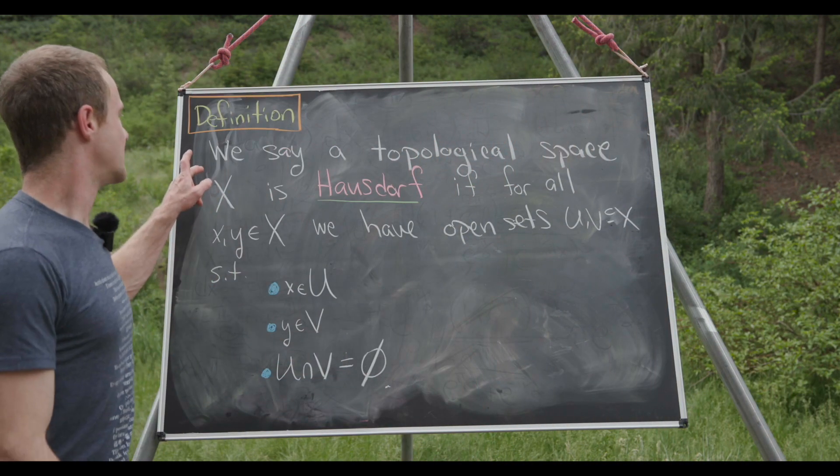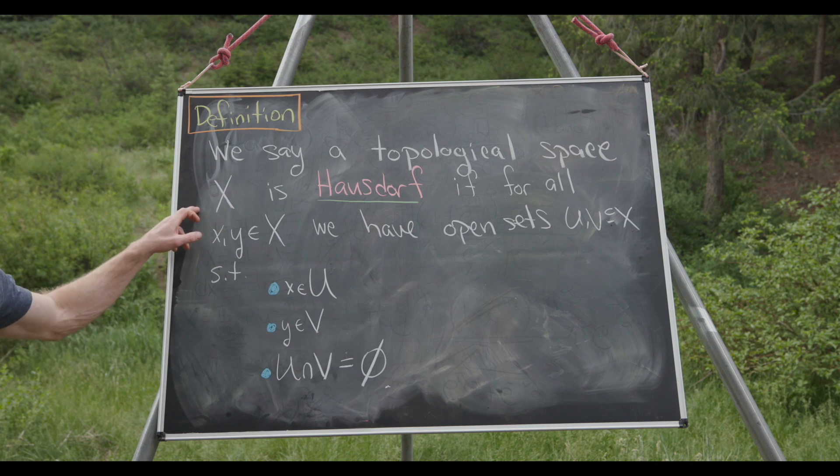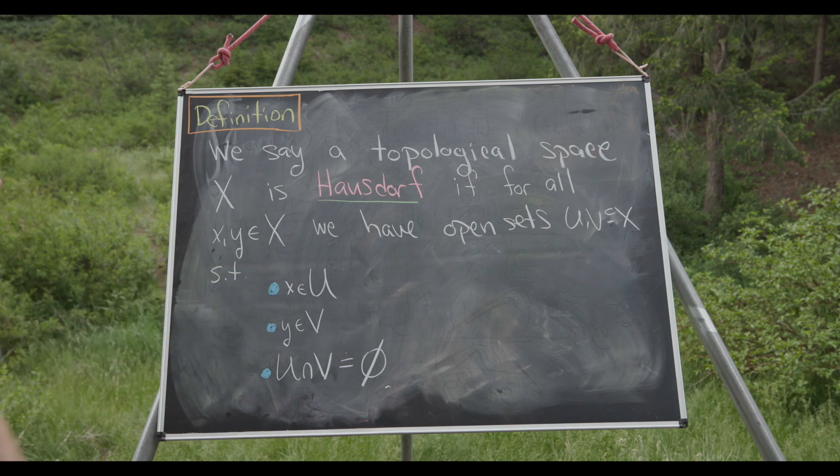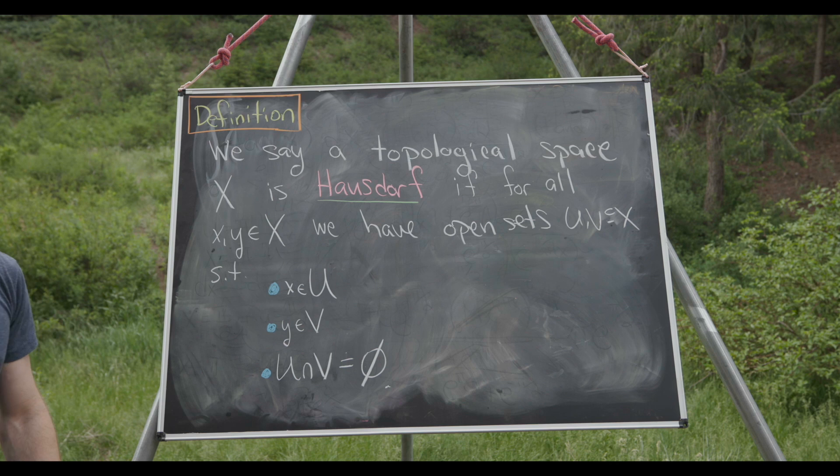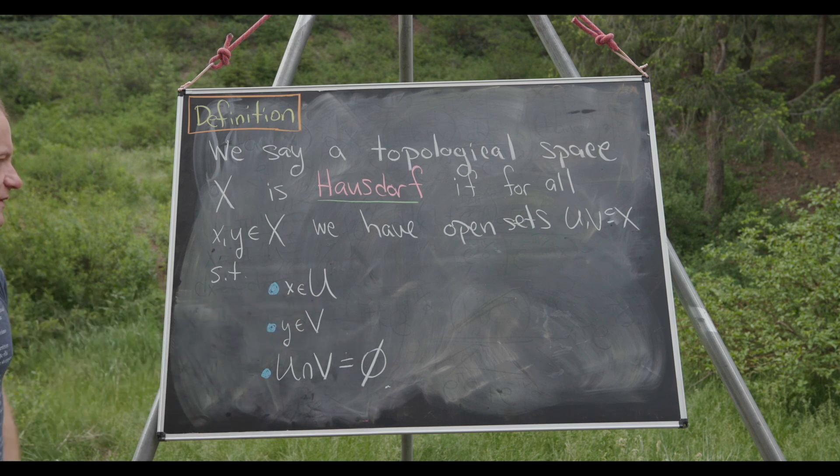We say that a topological space X is Hausdorff if for all points x, y in X, we have open sets U and V such that we have these three conditions: x is an element of U, y is an element of V, and U intersect V is empty.